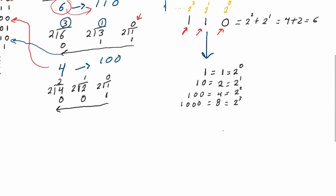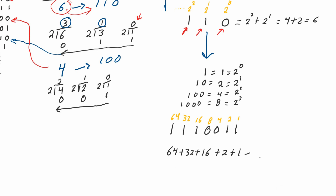Let's do one more example. Take the binary number 1-1-1-0-0-1-1. The corresponding powers of two, from right to left, are: 2 to the zero (1), 2 to the first (2), 2 to the second (4), then 8, 16, 32, 64. Notice you don't need to memorize these — it's just doubling the previous value. We then add all the powers of two that correspond to a one in our binary number: 64 plus 32 plus 16 plus 2 plus 1, which equals 115.